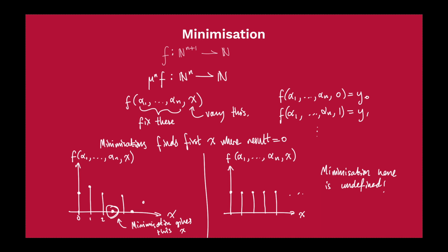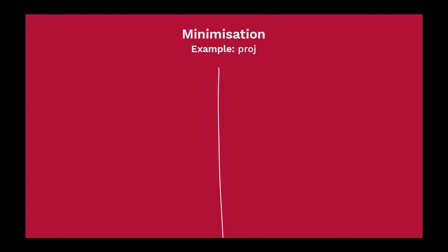Let's look at some contrived examples to work through what minimization is doing. Let's look at our friendly projection function: proj 2,2. It takes two inputs and gives us one output. When we minimize with one argument this function proj 2,2, the minimization is going to take one argument and give us one argument back. The number in the minimization tells us how many arguments the resulting function is going to take.